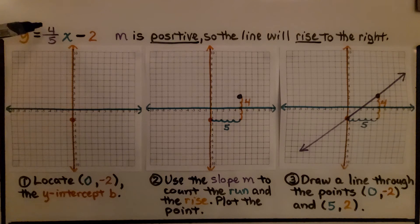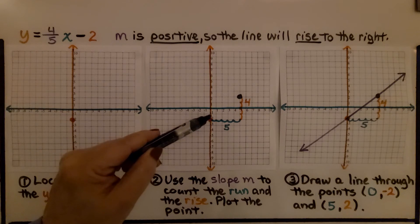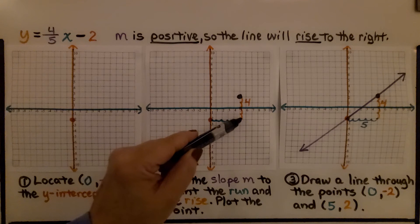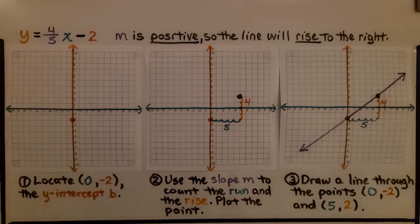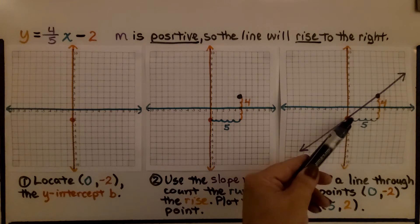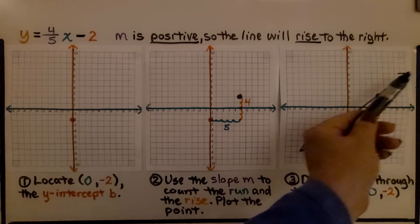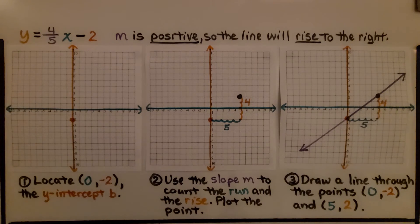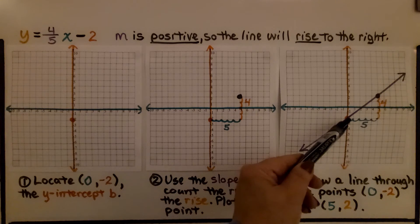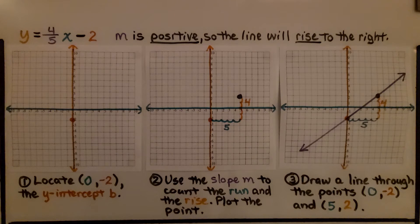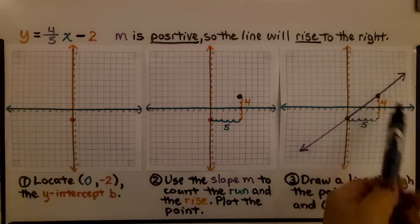We have a positive 4 for our rise and 5 for our run. We're going to go 1, 2, 3, 4, 5, and then up because it's positive, and that's going to put us here. We plot the point, then draw a line through this point and this point, making it continue on each side. We have our first ordered pair as (0, -2) and our second point as (5, 2).